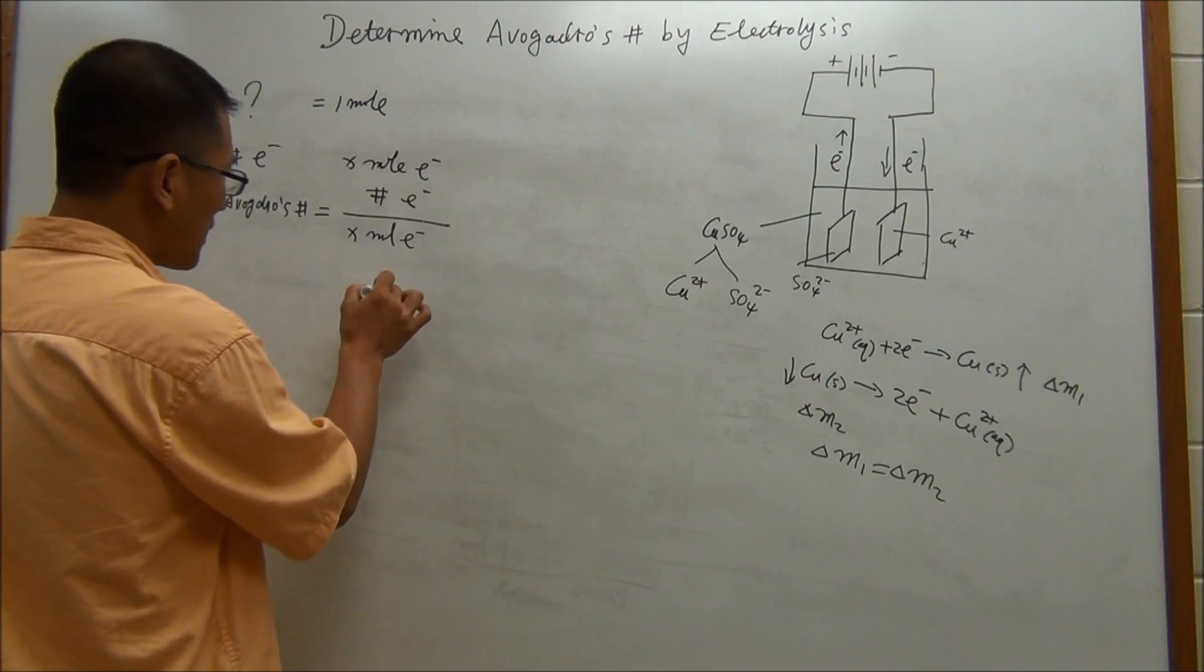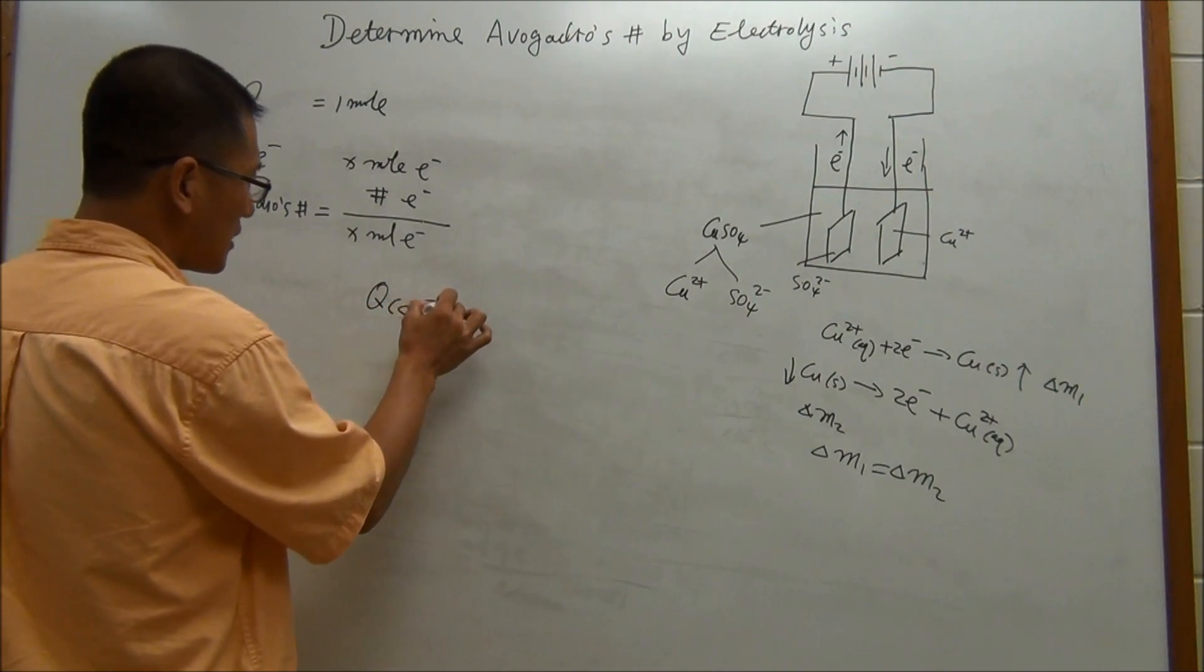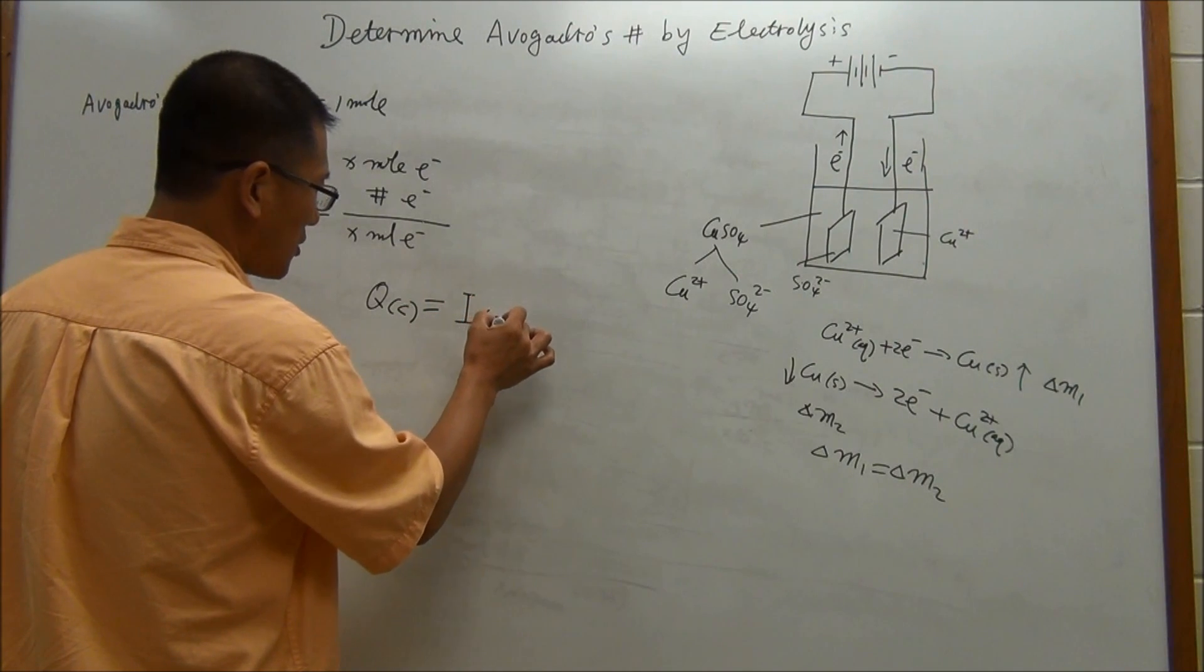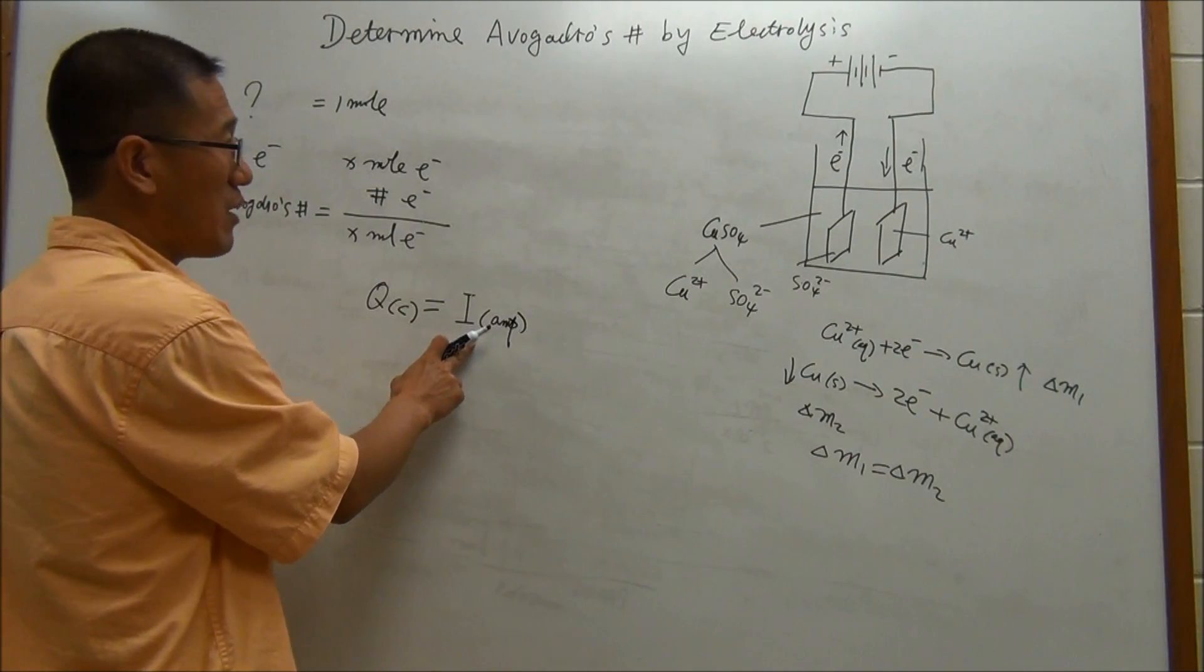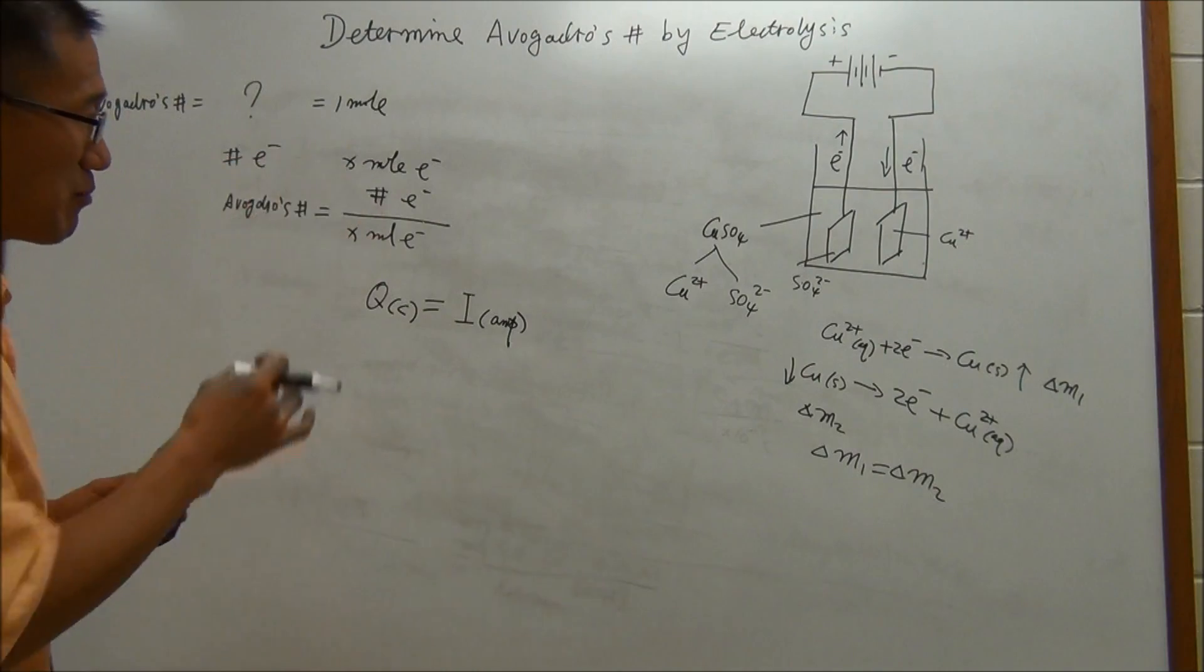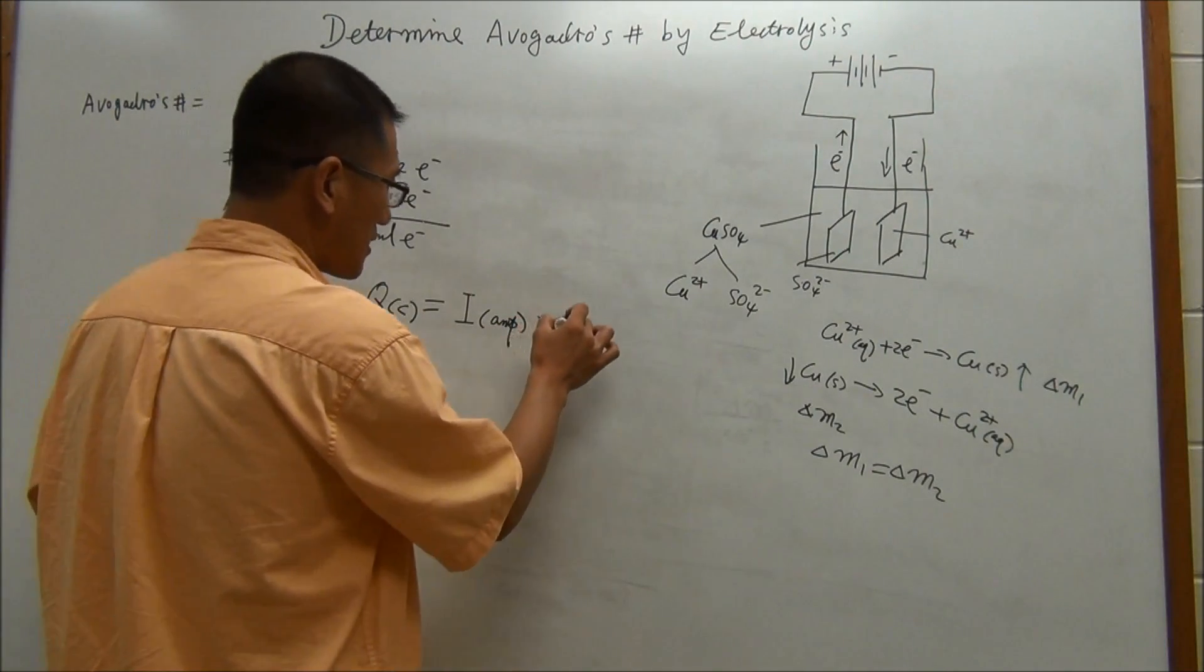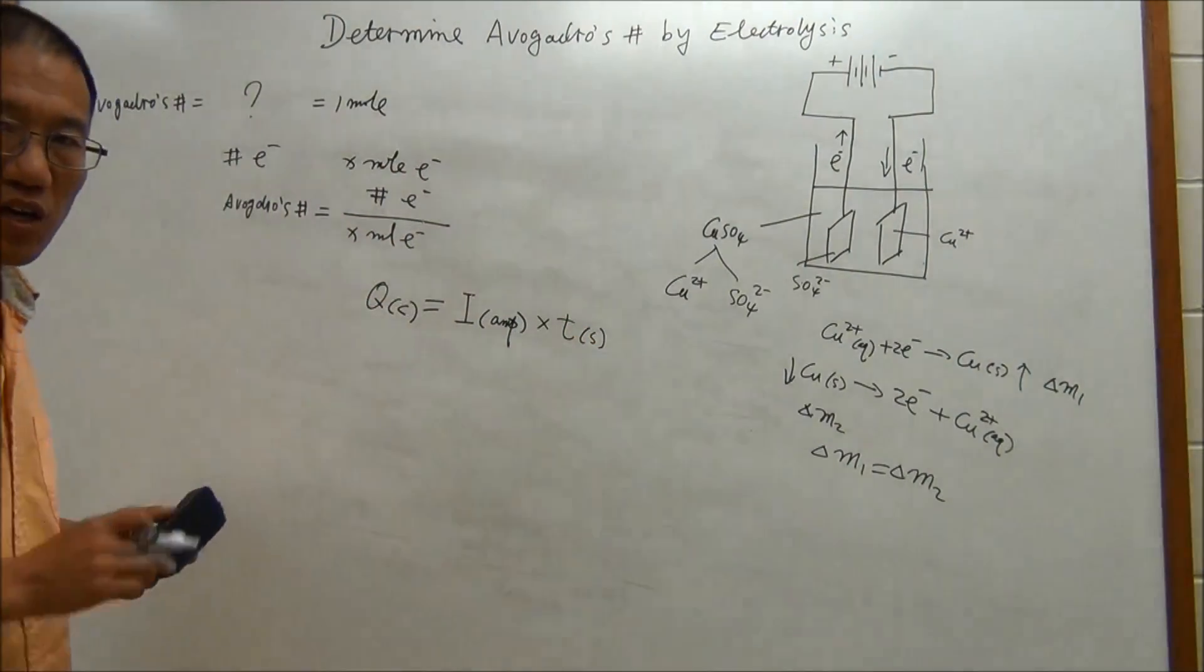In physics, we learn that the charge, which the unit is coulomb, is equal to the current, the unit is ampere. You can read this out directly from a meter, and then you can multiply the time in seconds, and this will give you the coulomb.